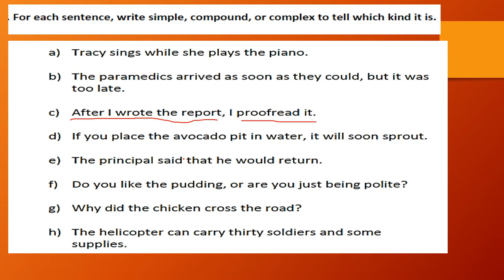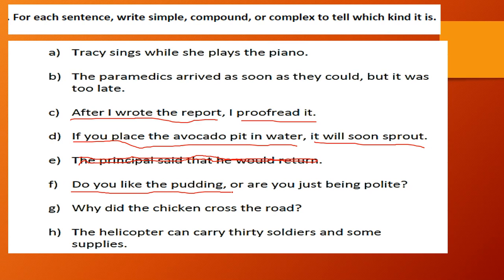'If you placed the avocado pit in water, it will soon sprout.' This is a complex sentence — the first part is the dependent clause starting with 'if' for condition, and 'it will soon sprout' is the independent one. 'Do you like the pudding, or are you just being polite?' Both parts can stand alone and 'or' is a coordinating conjunction, so this is a compound sentence. 'Why did the chicken cross the road?' — simple sentence.